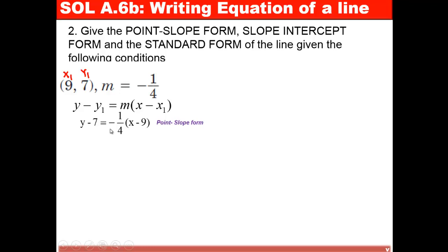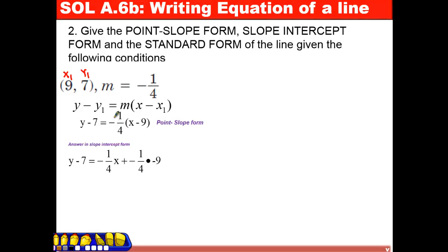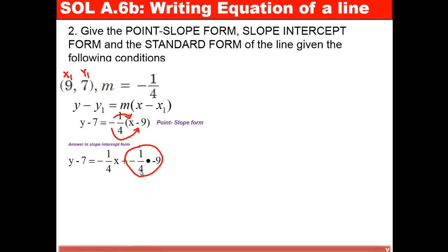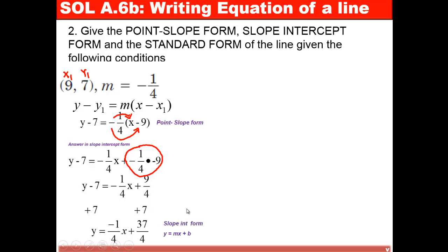Next, we write this into slope-intercept form. I distributed negative 1/4 to x and negative 1/4 times negative 9. We get negative 1/4 x plus positive 9 over 4, since negative 1 times negative 9 gives positive 9. Getting rid of the negative 7, I add 7 on both sides. 9 over 4 plus 7 gives us 37 over 4. This will be our slope-intercept form.